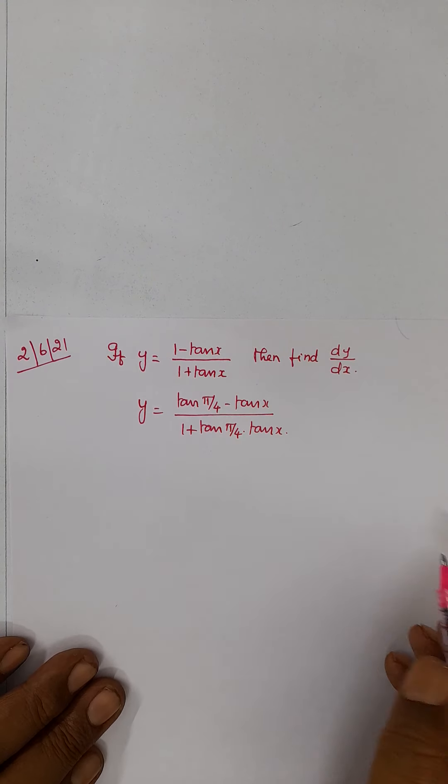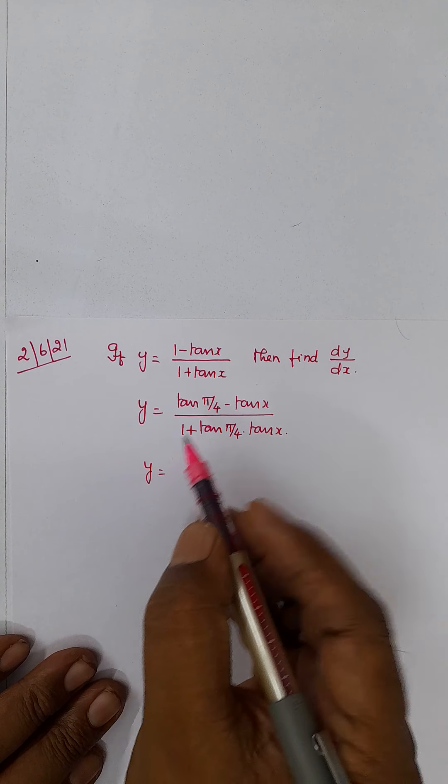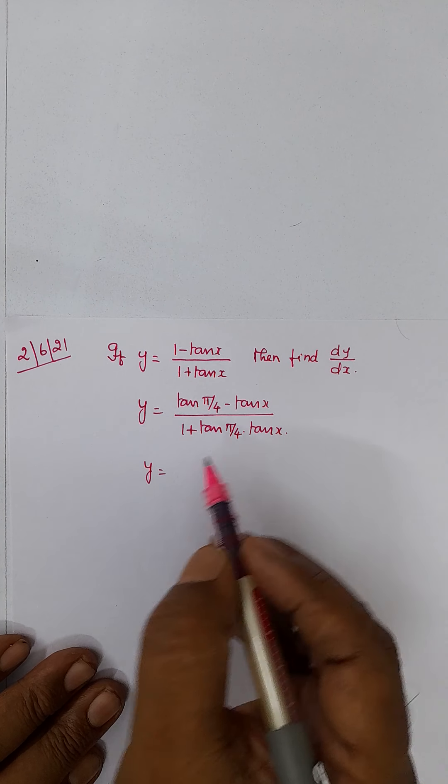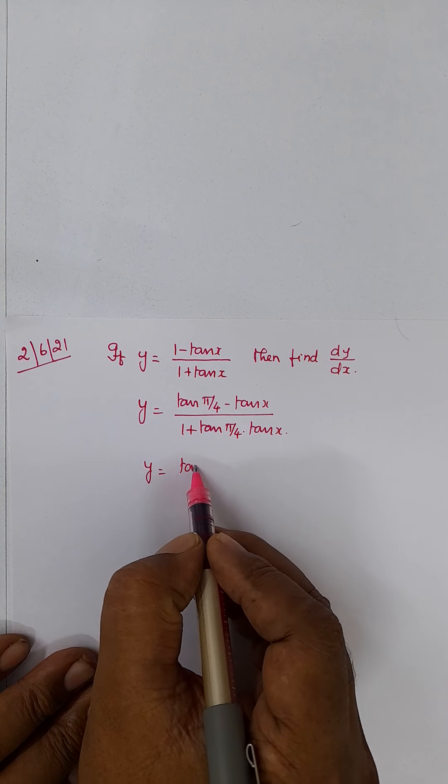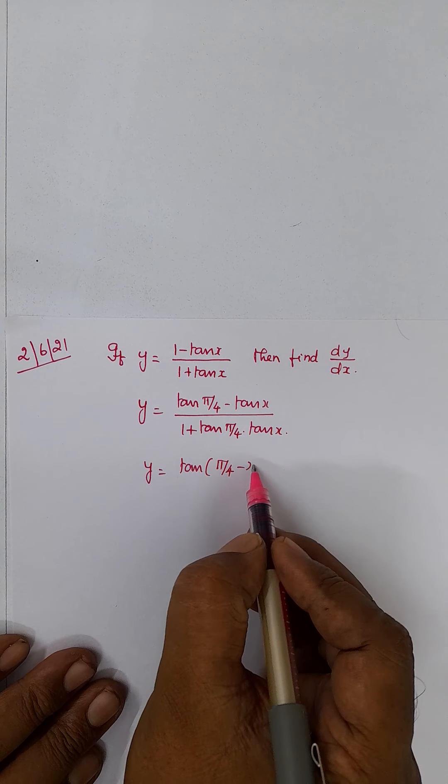Now, this you know, compound angle formulas. So, y is equal to tan a minus tan b by 1 plus tan a into tan b. That is nothing but tan of a minus b. So, pi by 4 minus x.